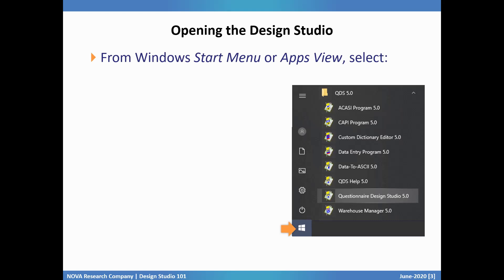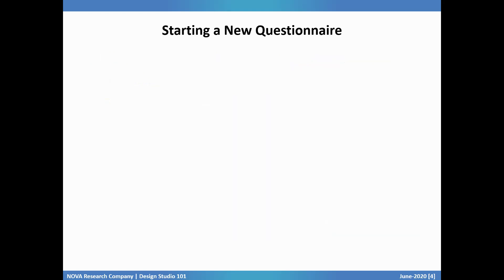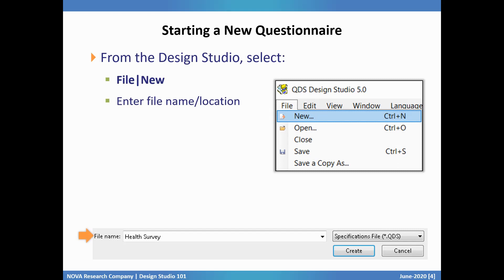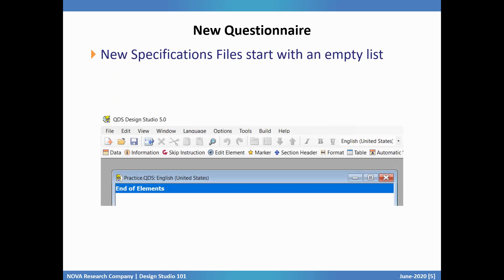To get started, from the Windows Start menu or apps view depending on your version of Windows, go to QDS 5.0 Questionnaire Design Studio 5.0. To start a new questionnaire in the Design Studio, go to File > New from the menu. Enter a file name and navigate to the location where you would like it saved. Note that Design Studio files will always have the extension .qds. Then click the Create button. When the new specification window opens, you'll notice that it starts with an empty list — the only item is an End of Elements flag. As you build your questionnaire with different types of elements, they will appear here in what is called the element listing.